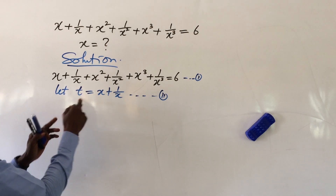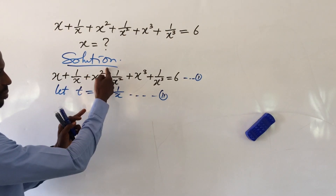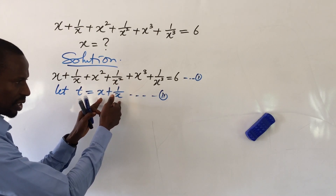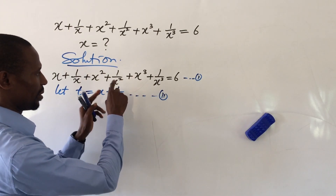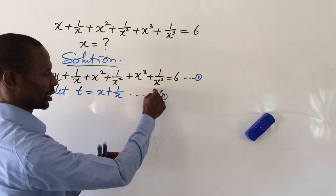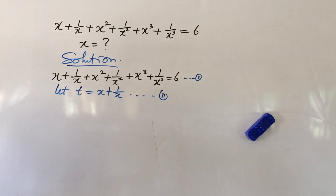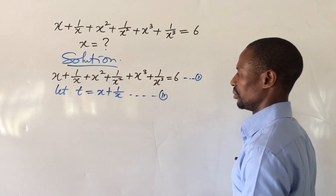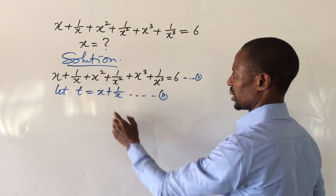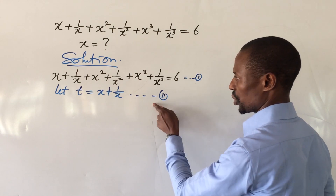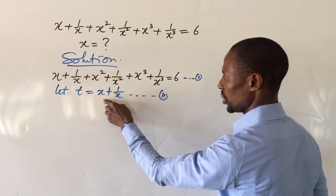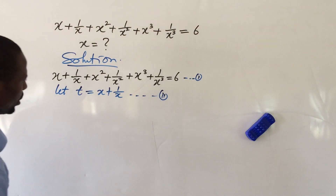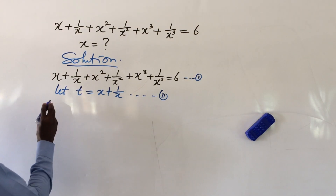We have to get the value of x² + 1/x² and the value of x³ + 1/x³ from Equation 2. To get x² + 1/x² we square Equation 2, and to get x³ + 1/x³ we cube Equation 2. So let's start by squaring Equation 2.